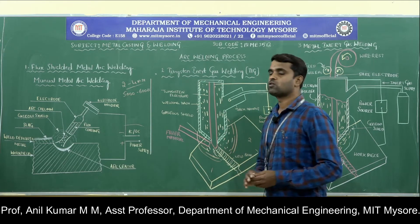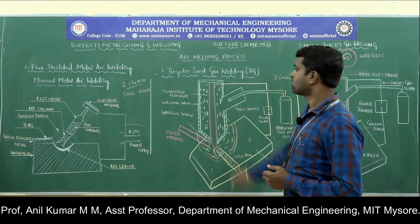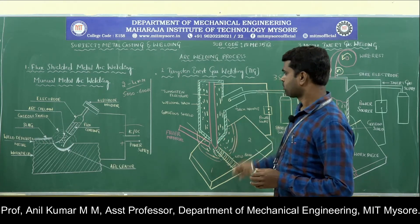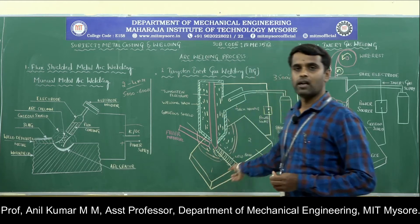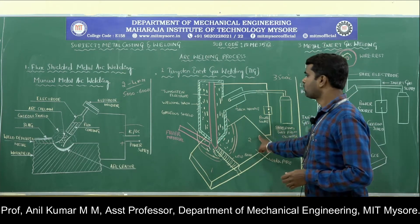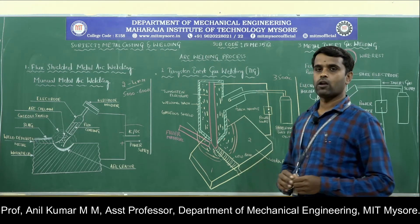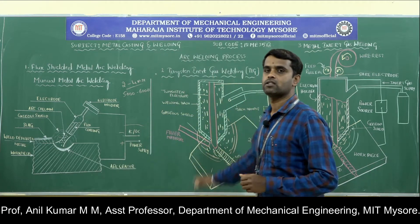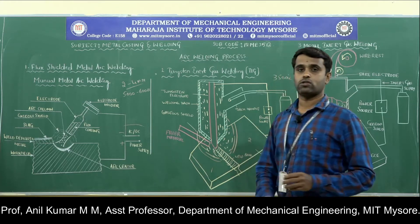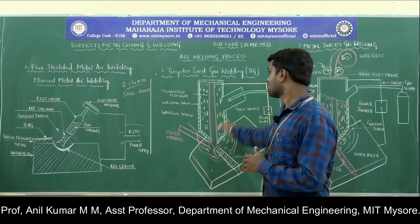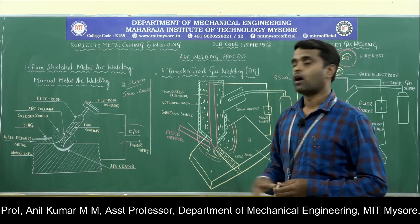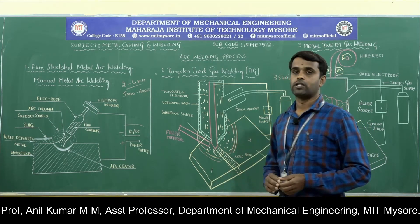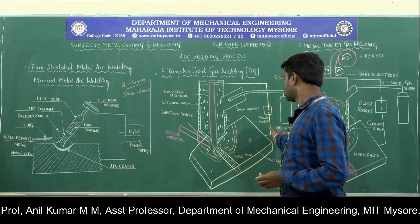The advantages of TIG welding include: it is suitable for welding very thin metal pieces; clear visibility of the arc, giving the operator greater control; strong and good quality joints can be obtained; and since no flux is used, there is no slag formation, so clean joints are produced. The disadvantages are that TIG welding is the most difficult welding process compared to others, it is not suitable for welding thick metal pieces, highly skilled workers are required, and the process is very slow.